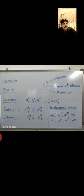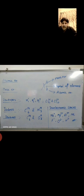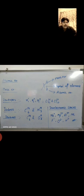Our next topic is atomic number. Whenever we discuss atomic number, most probably we get the answer: the number of electrons. But actually, atomic number is the total number of protons present in the nucleus of an atom. It is equal to the number of electrons, but only for a neutral atom — not for all atomic forms. For example, Cl represents a neutral atom, but Cl⁻ is not an atom.